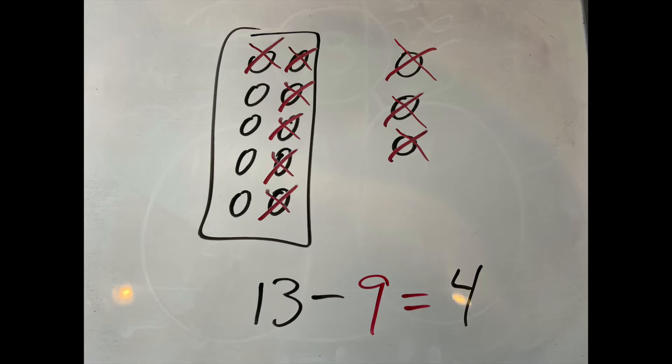After you've done a sufficient amount of building and covering, you can move to just drawing this out. Actually draw 13 circles, cross out 9 of them. That's a nice approach. And in general, there's a movement from concrete to pictorial — you build it, you draw it, and then you record the meaning of it using the expressions and the equations. And that's how we fix real understanding in our kids' minds.